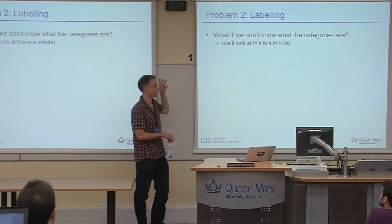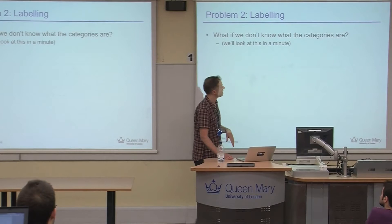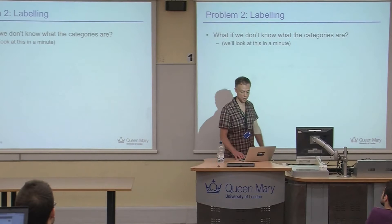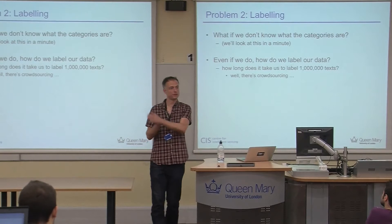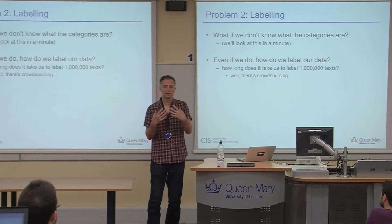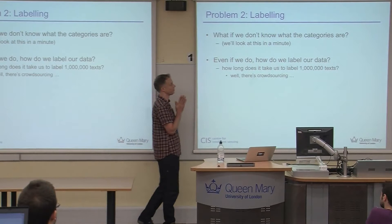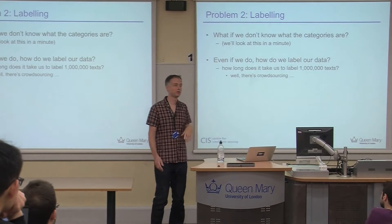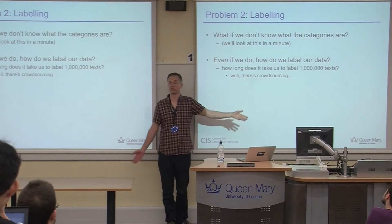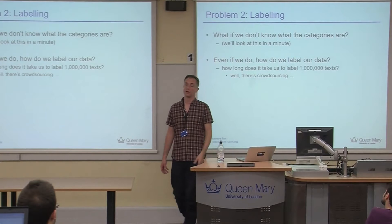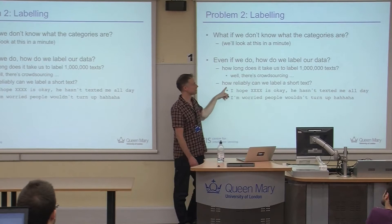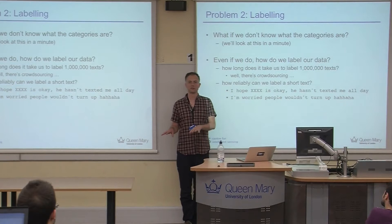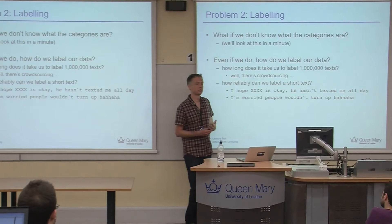Another problem is labeling. We've assumed we have a binary decision problem and lots of labeled data — but going and getting that data takes a long time if we have to label it all by hand. There are ways around this like crowdsourcing annotation, but there are reliability issues. And there's a deeper problem: it's quite difficult for someone who didn't write the text originally to actually know how to label it. It's quite difficult as a third party to understand what somebody really meant.